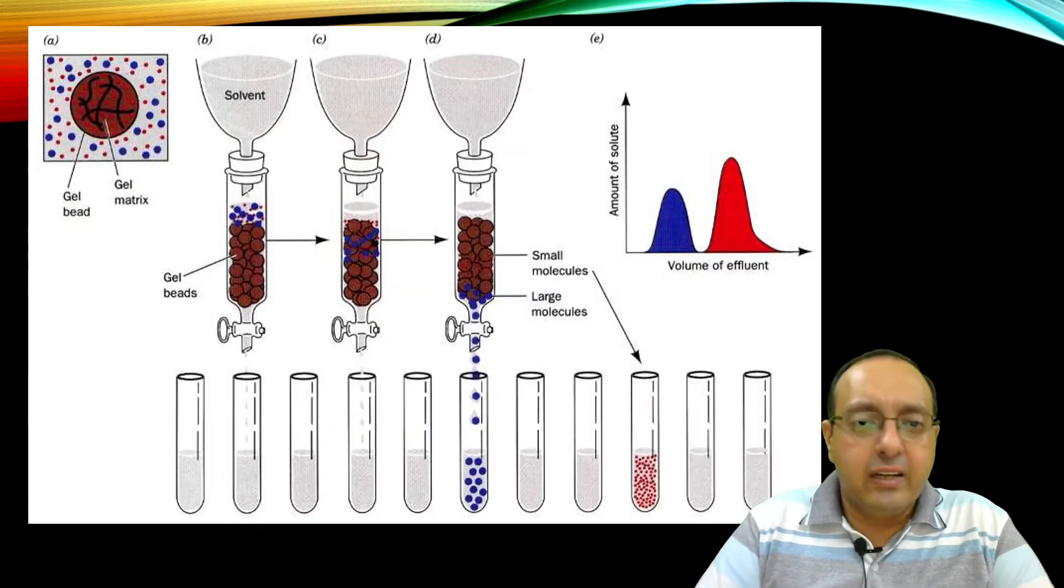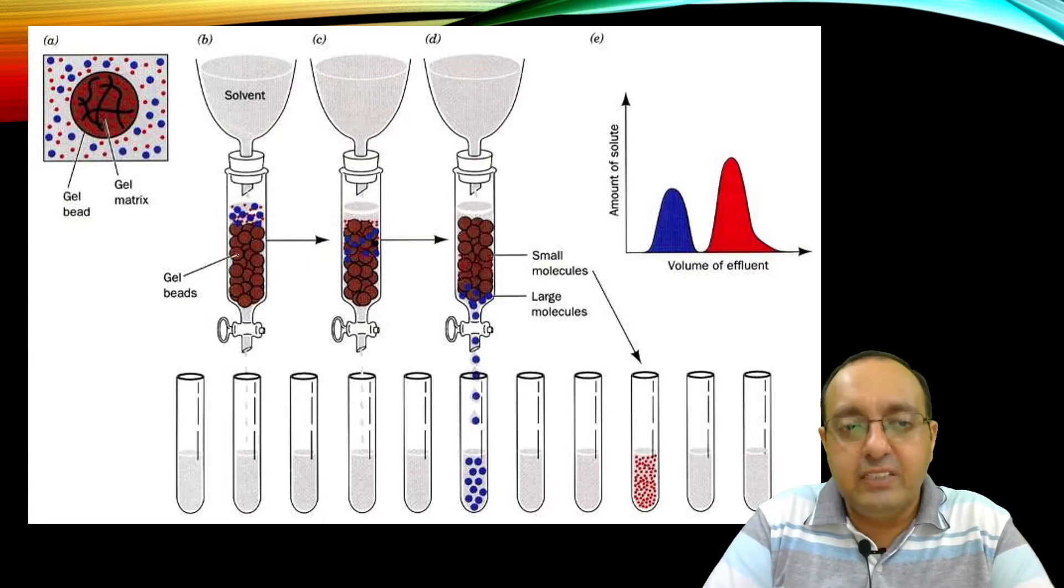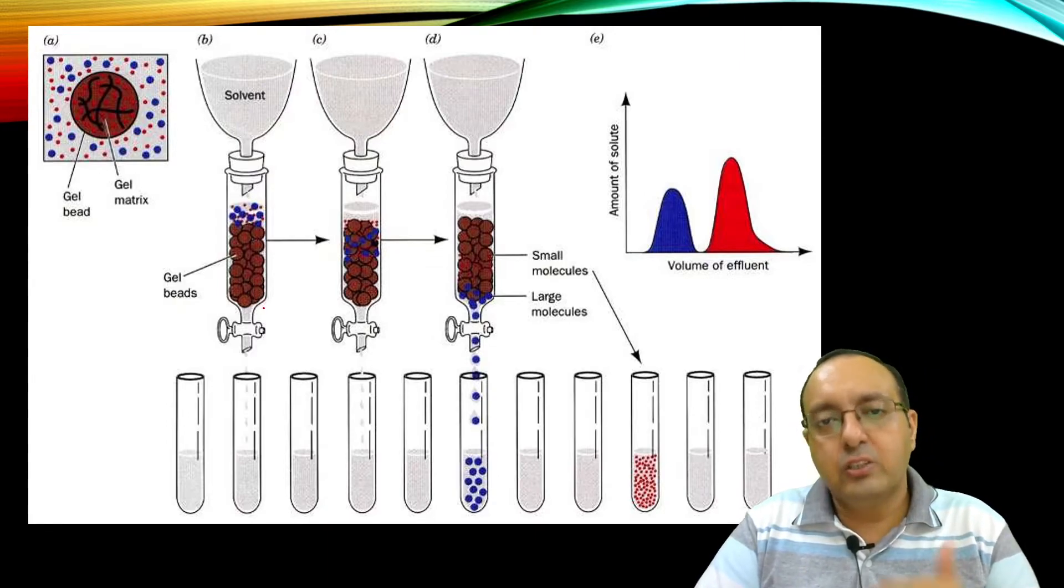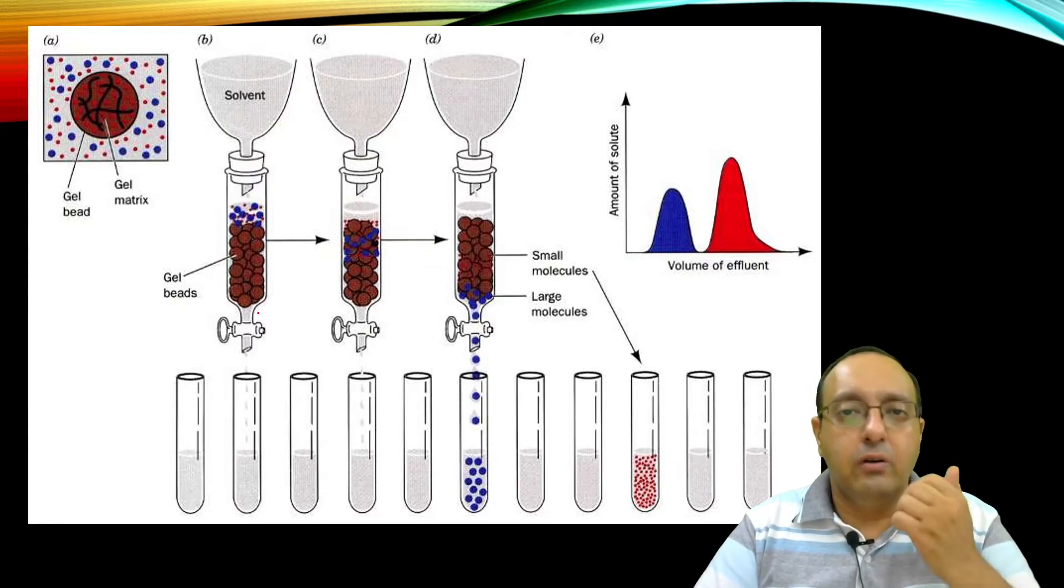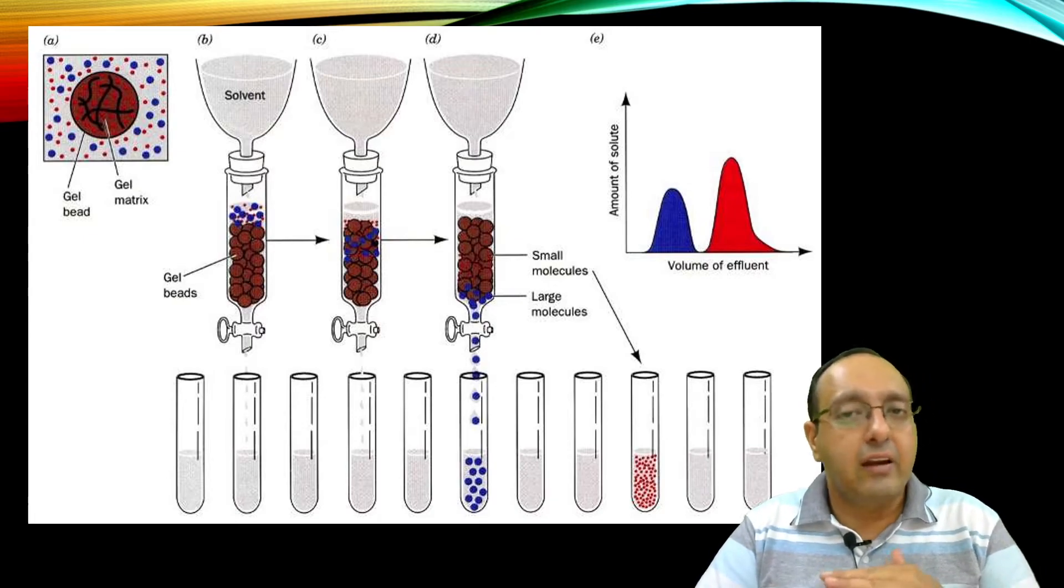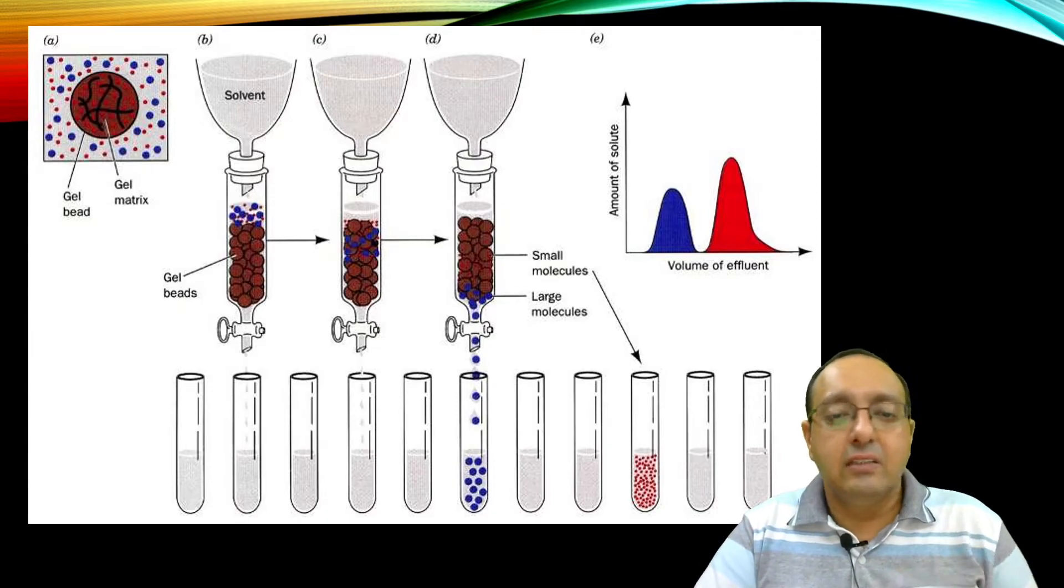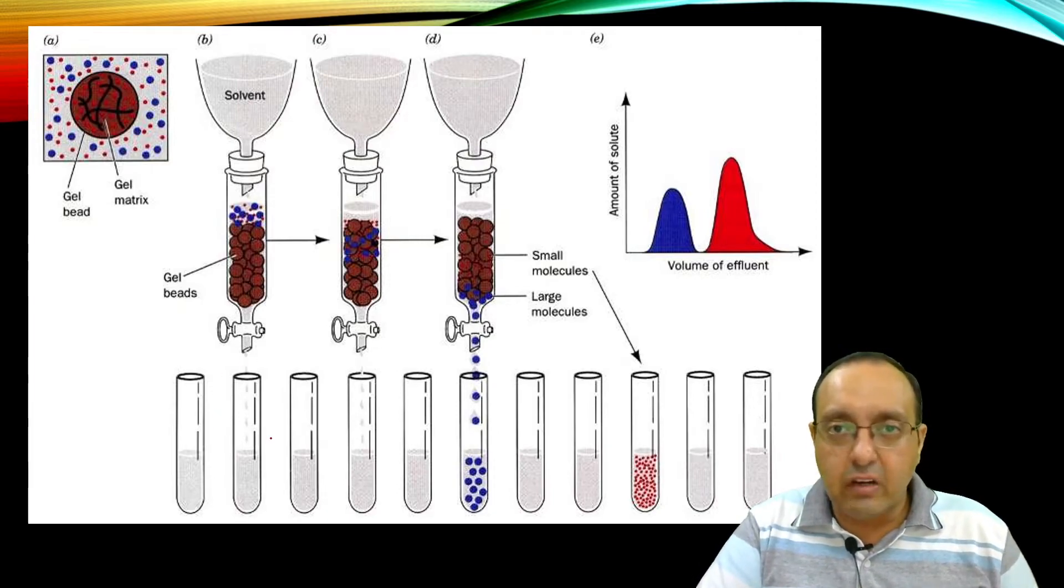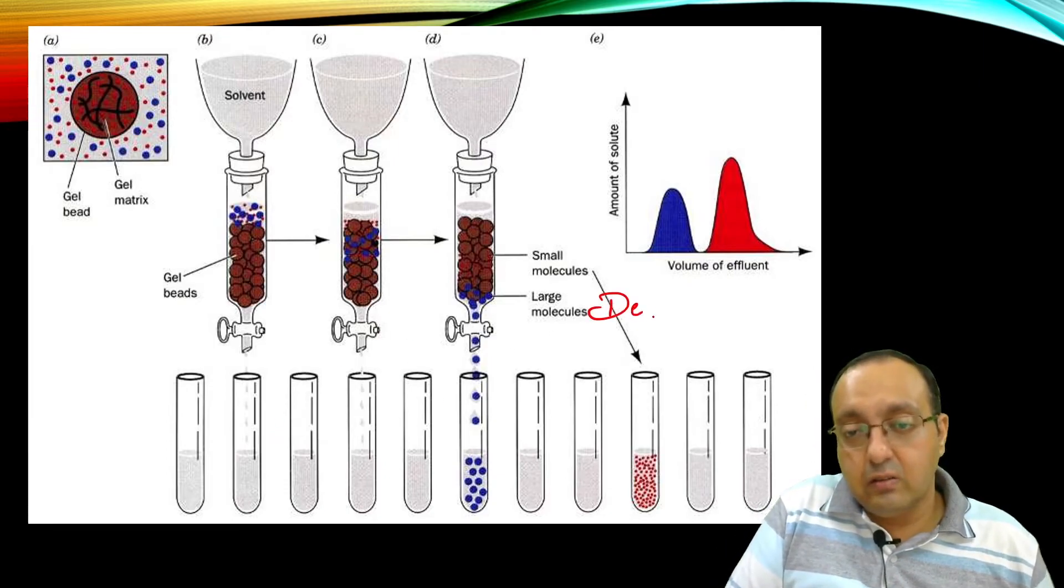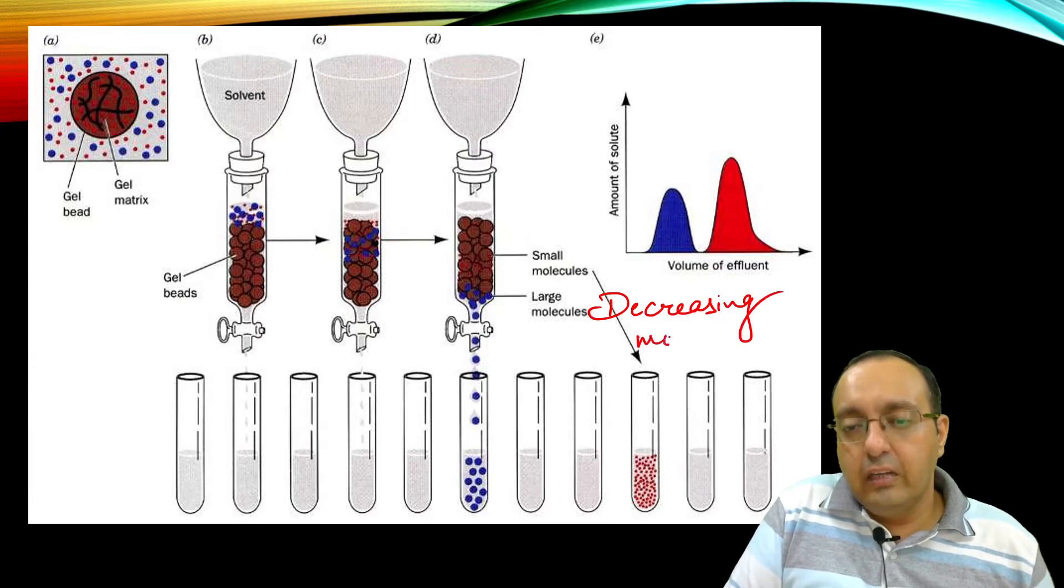To explain in more detail, we have gel beads here. These gel beads are of a certain diameter. They will only allow proteins or particles of a certain diameter to enter them and exclude everything else. The fractions we collect will be in decreasing molecular weight—that's the order they elute out.